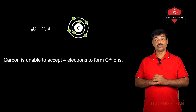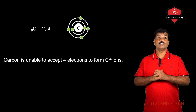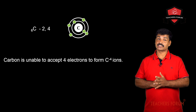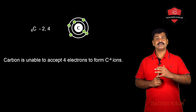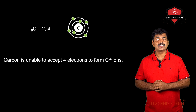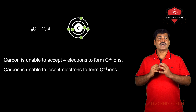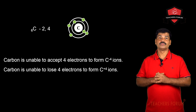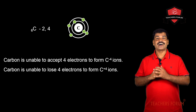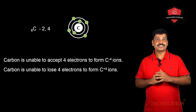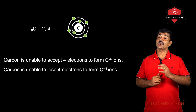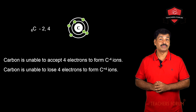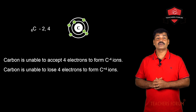What if carbon loses its 4 outermost electrons? It could reach the nearest noble gas configuration, that is the helium configuration. However, carbon cannot lose those 4 electrons because a large amount of energy is required to remove them. So carbon cannot accept 4 electrons to get noble gas configuration, and at the same time, carbon cannot lose 4 electrons to reach the nearest noble gas configuration.